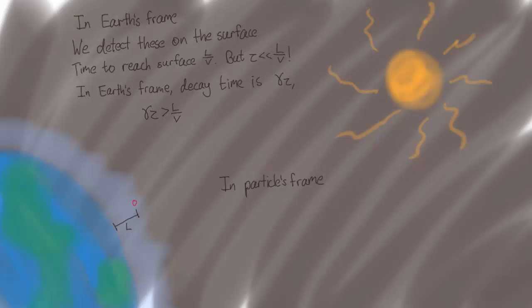Now let's look at things from the particle's frame. So from the muon's point of view, it is stationary and the earth is rushing towards it at speed v.